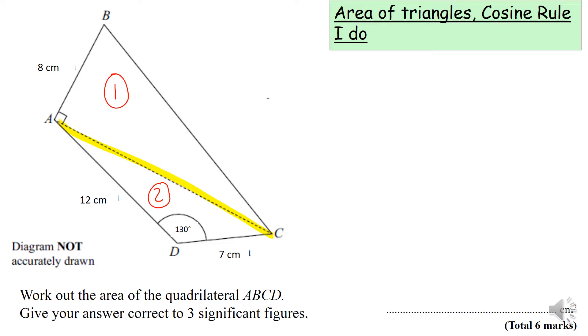Looking at triangle 2, it does not have a right angle so I can't use Pythagoras or SOHCAHTOA. I have sine rule and cosine rule in my toolbox. I have two lengths, 12 centimeters and 7 centimeters, with an angle between them of 130 degrees. If you have two lengths and an angle between, you need to use the cosine rule.